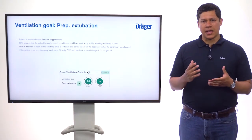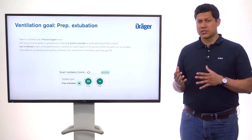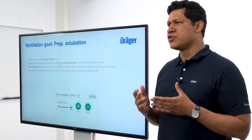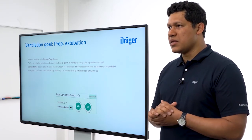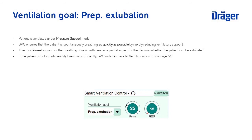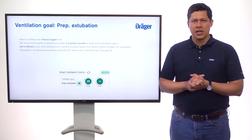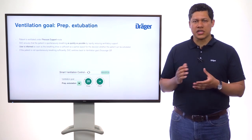The fourth and last ventilation goal is Preparation for Extubation. The patient will be ventilated under pressure support mode. Smart Ventilation Control ensures the patient is spontaneously breathing as quickly as possible by rapidly reducing ventilatory support. The user is informed as soon as the breathing drive is sufficient, as a partial indicator for the extubation decision. If spontaneous breathing is insufficient, Smart Ventilation Control will automatically switch back to the Encourage Spontaneous Breathing goal.